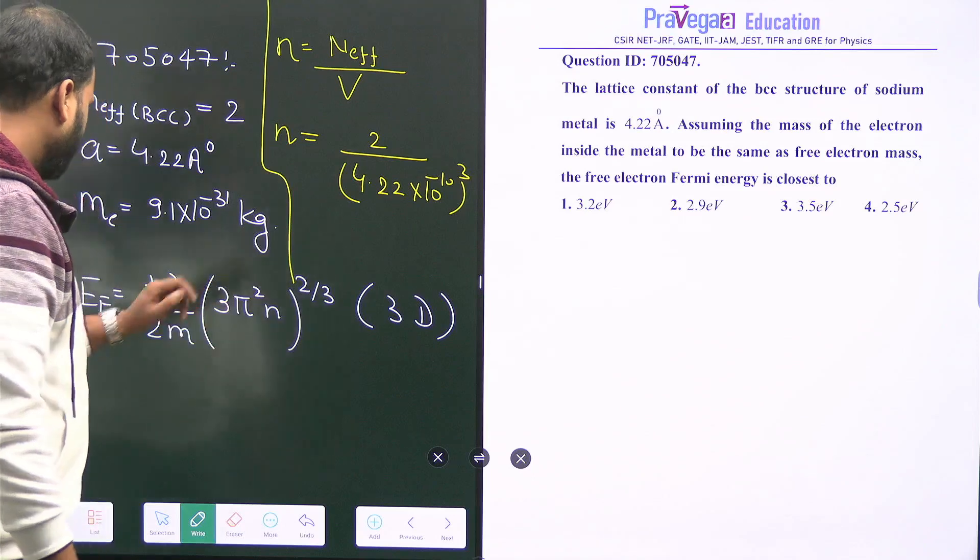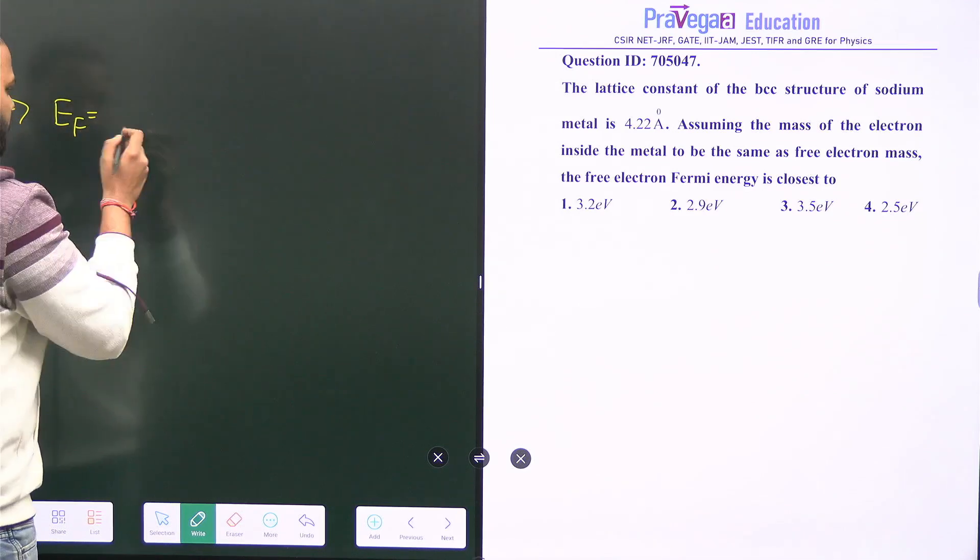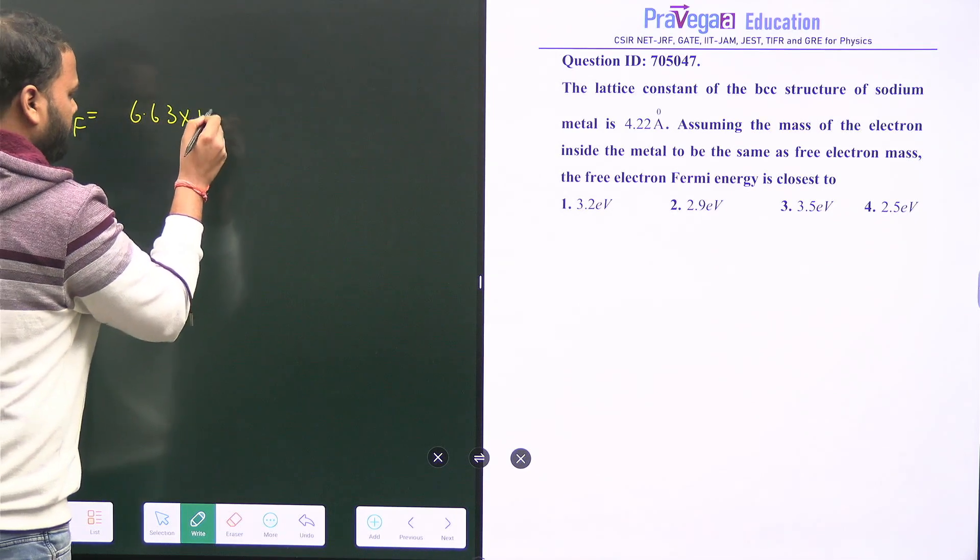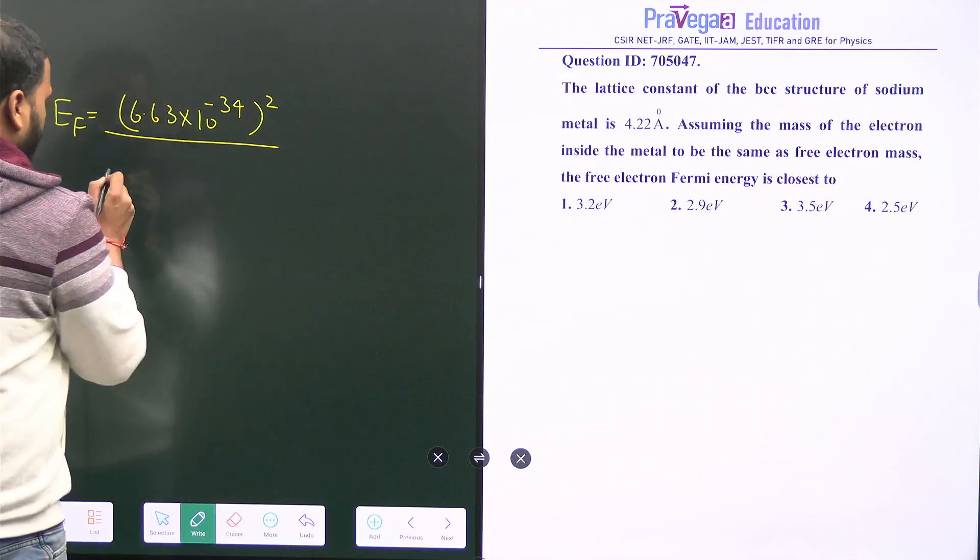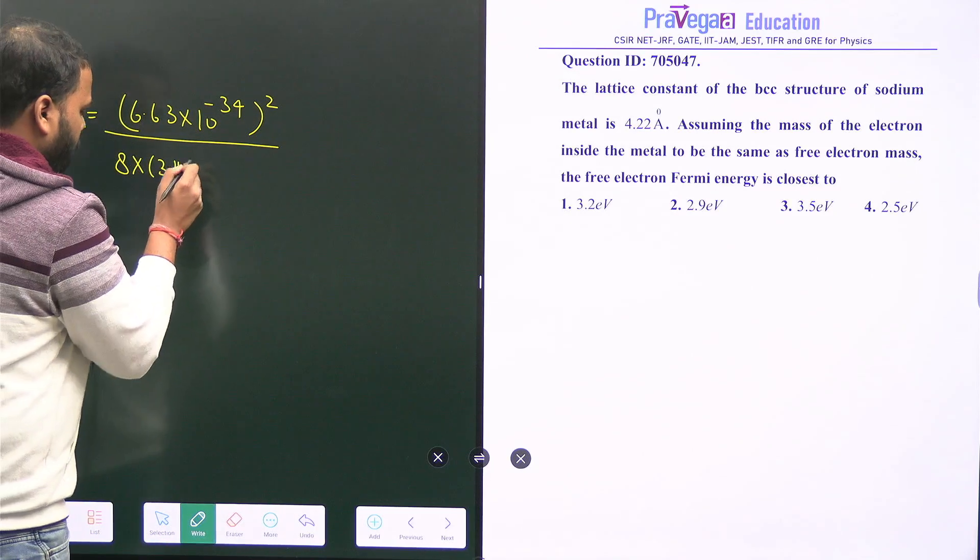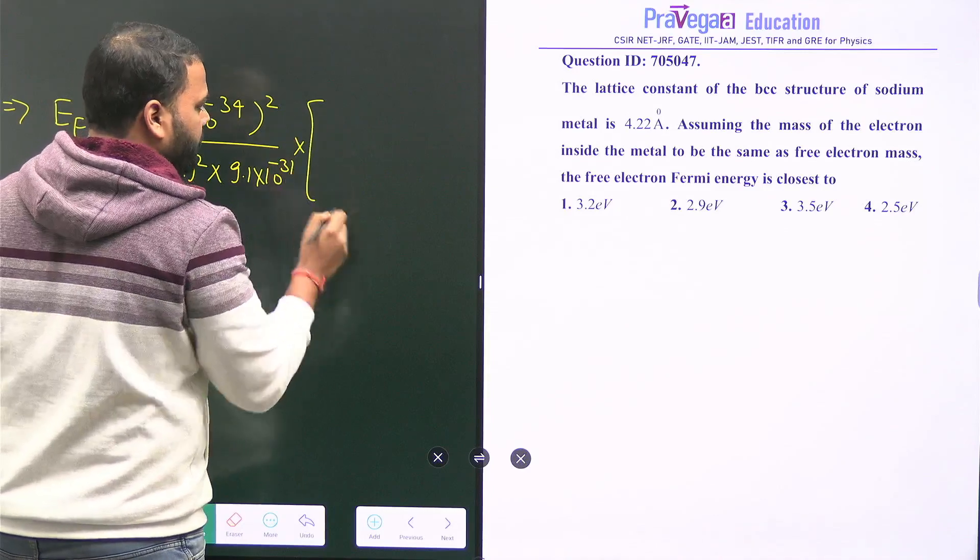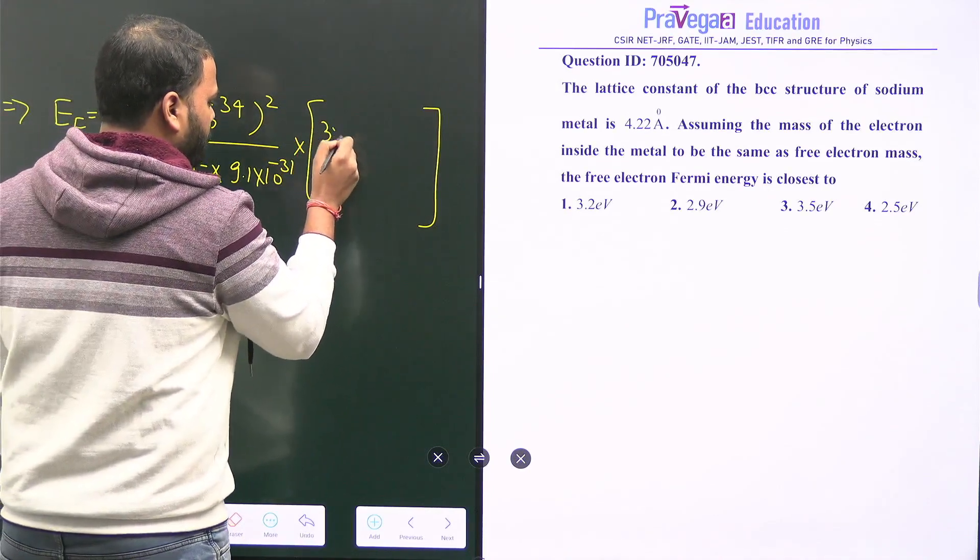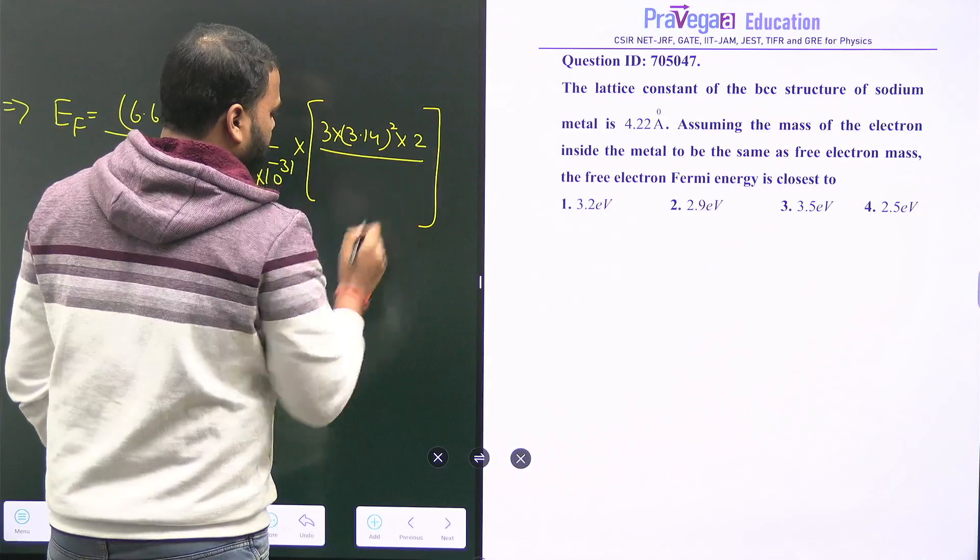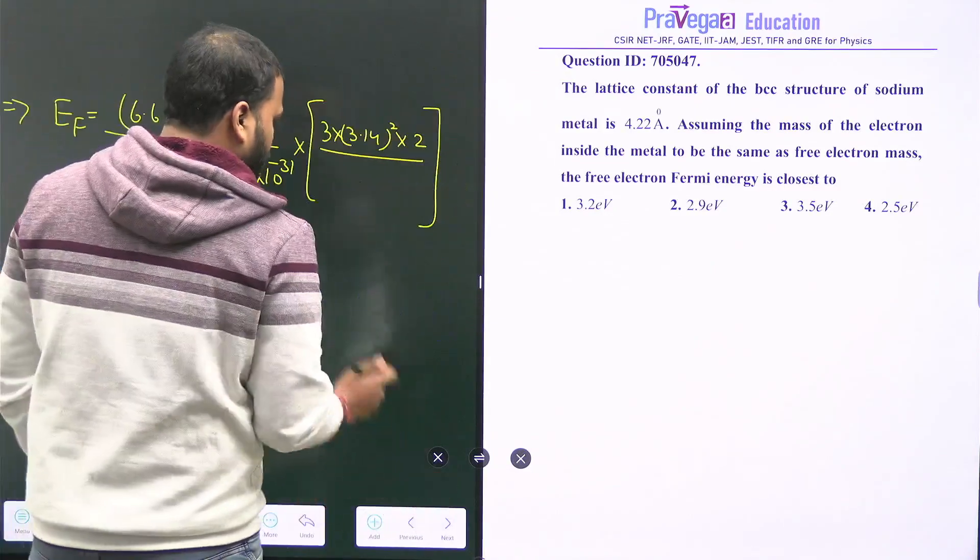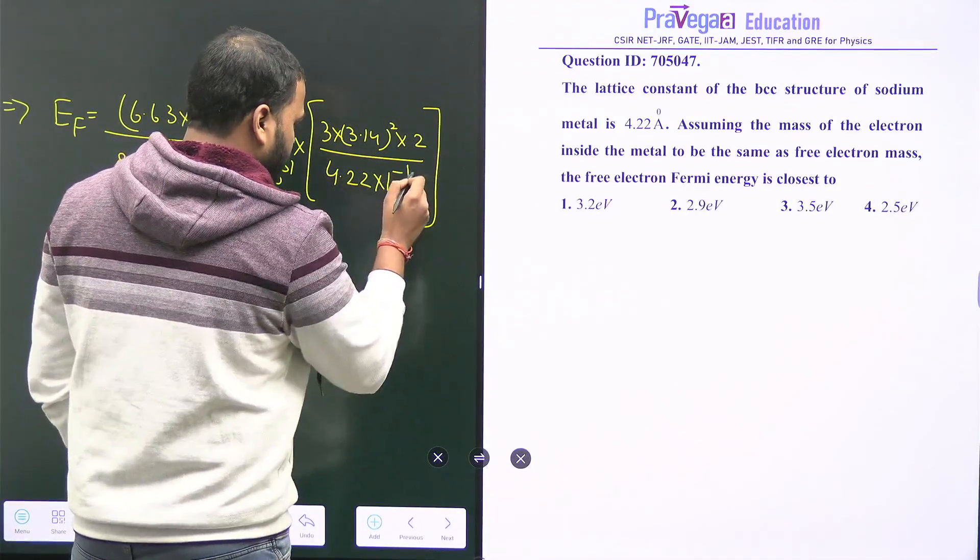Just use this value in the expression. The Fermi energy is h² over 2m. Put the values directly: 6.63 times 10 to the power minus 34 squared, divided by 8π², and m is 9.1 times 10 to the power minus 31 kg. Inside brackets, 3π²n, where n is 2 divided by 4.22 times 10 to the power minus 10 whole cubed.